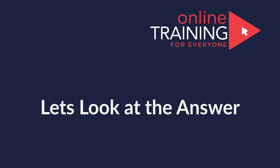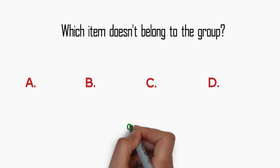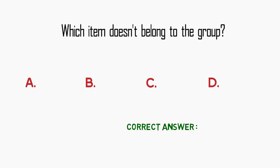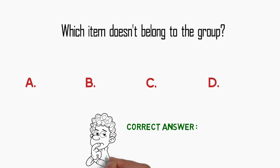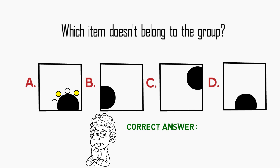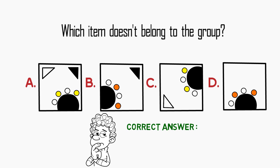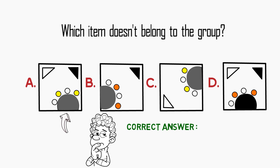There is always a pattern you need to detect, and many items are designed to confuse you. You have small circles — four in each square — but they have no pattern. You also have triangles; some squares have two and some have one, but again no pattern there. The pattern is actually defined by the half circles. As you can see, all half circles are attached to the corners of the square in shapes A, B, and C.